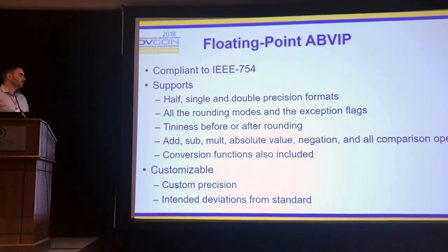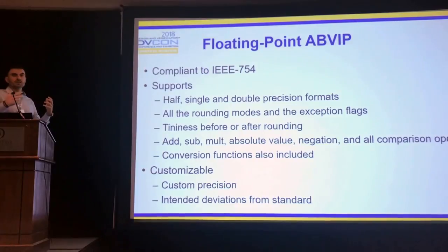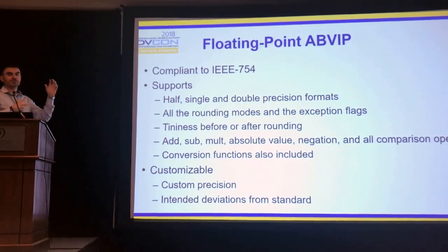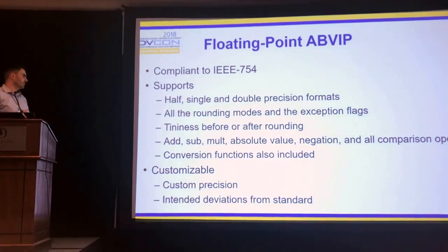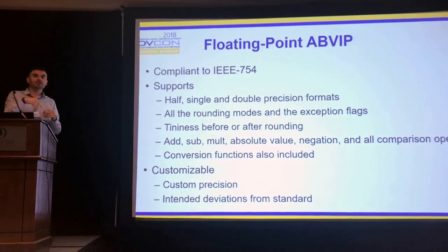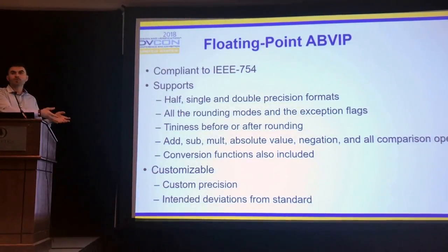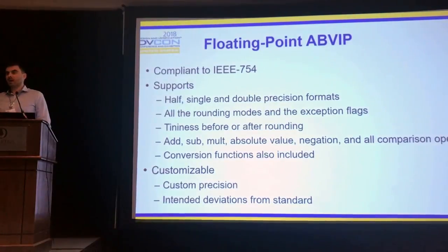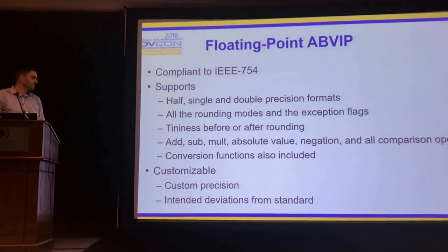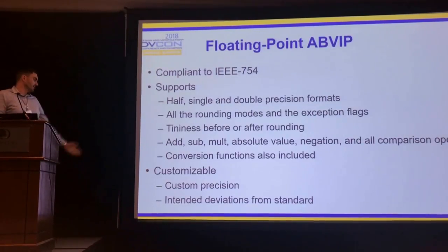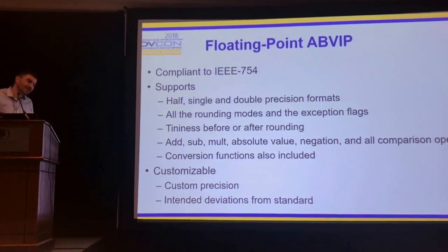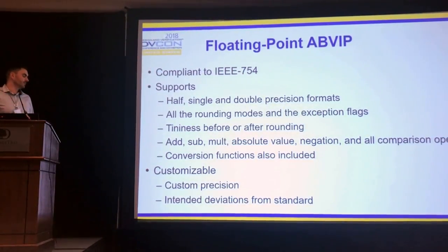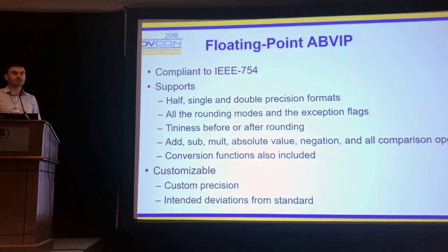Conversion functions are also included, because you can configure the IP differently to handle half and double precision, but your operands may be defined for single precision. If you want to go to half precision, the environment lets you convert the possible values that an operand can take. Formal will generate all possible values, constraining operands to be within half precision because the computed output — for example, multiplication — is in half precision. Deviation from the standard can also be configured.